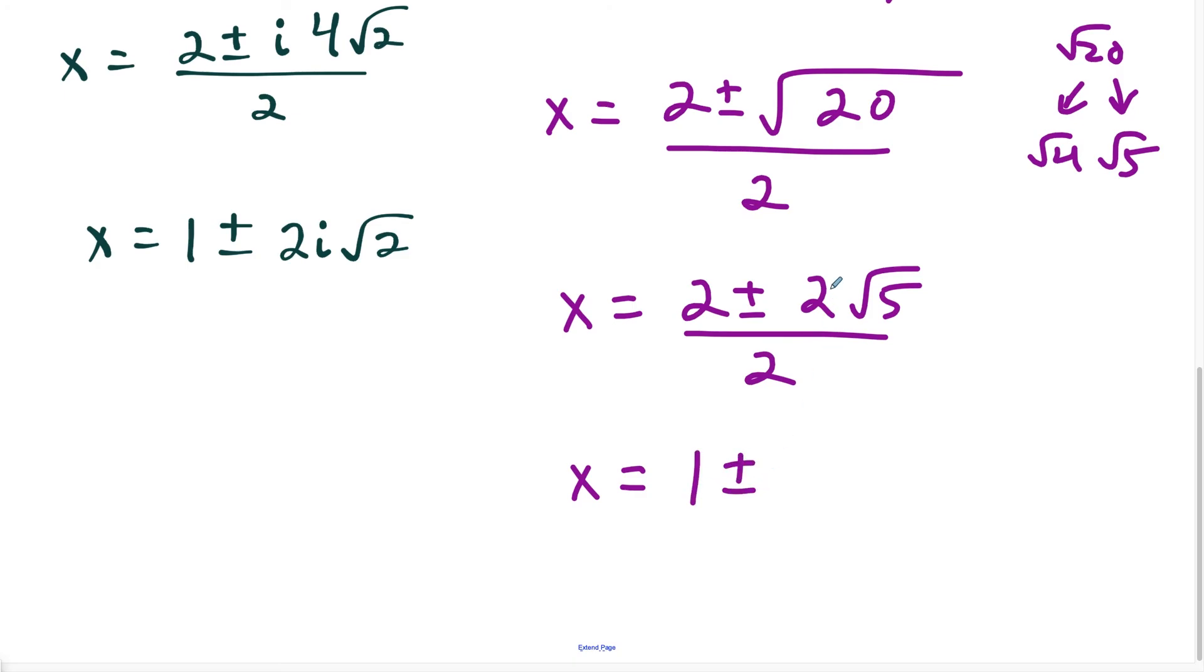So this simplifies to x equals 2 divided by 2 is 1, plus or minus 2 divided by 2 cancels out, giving us just square root of 5.